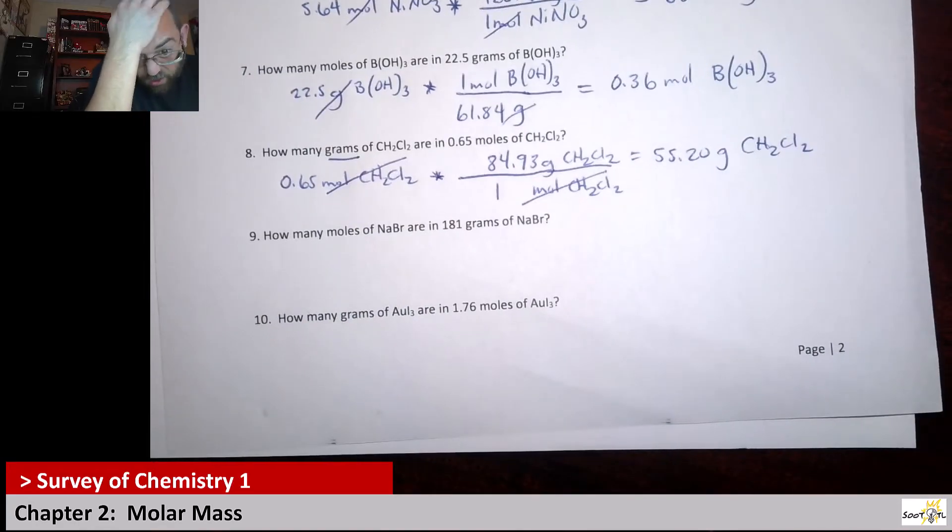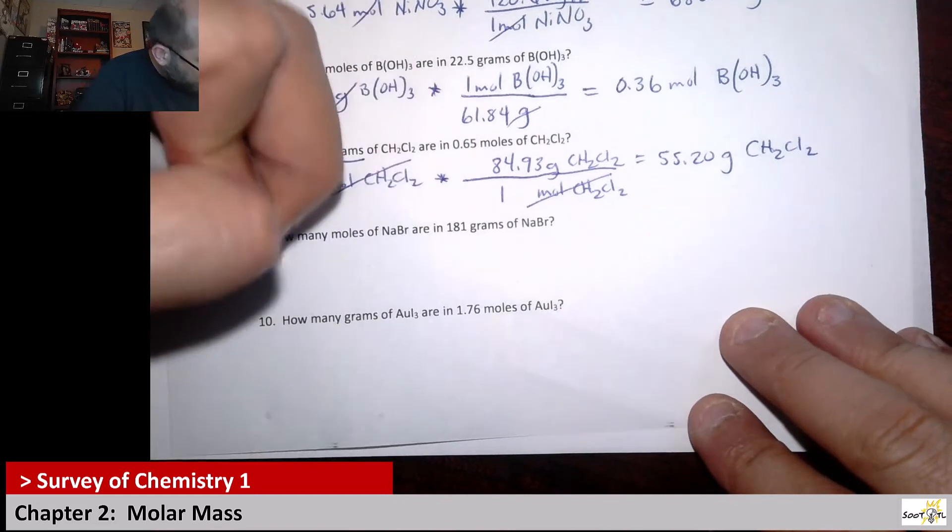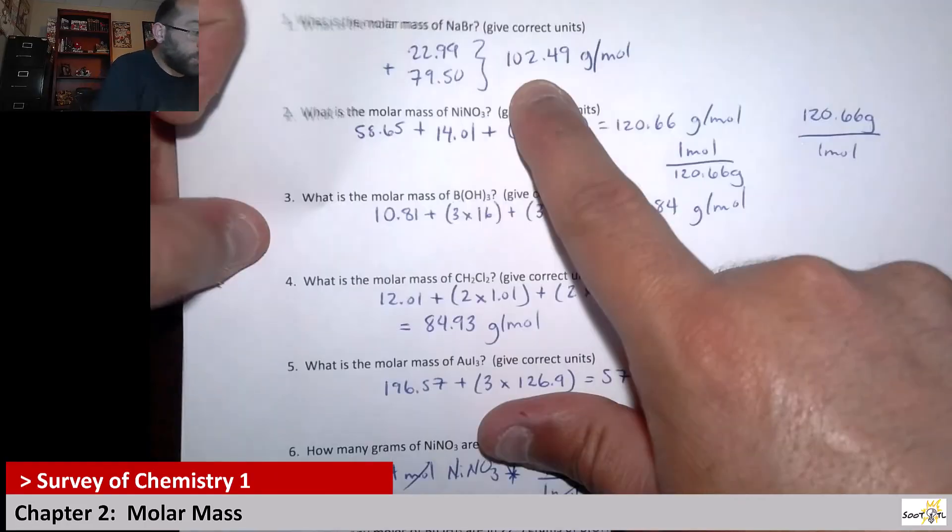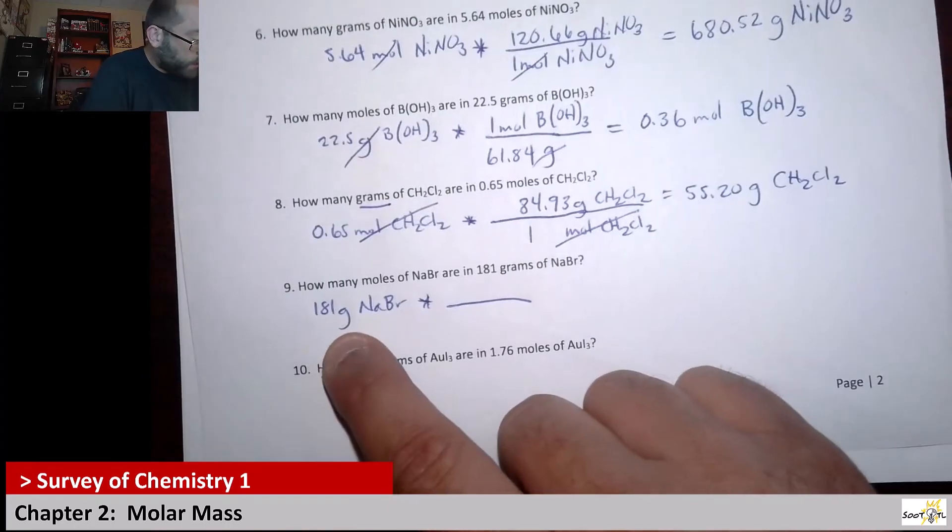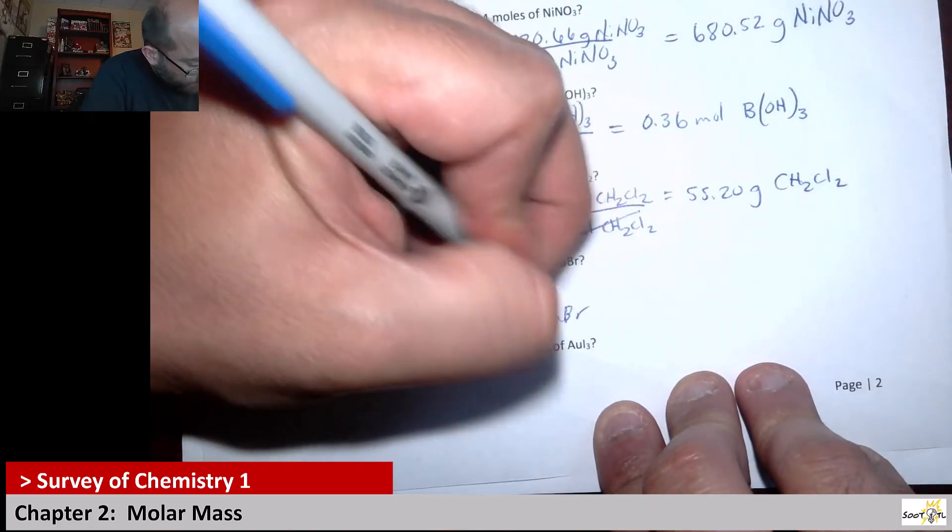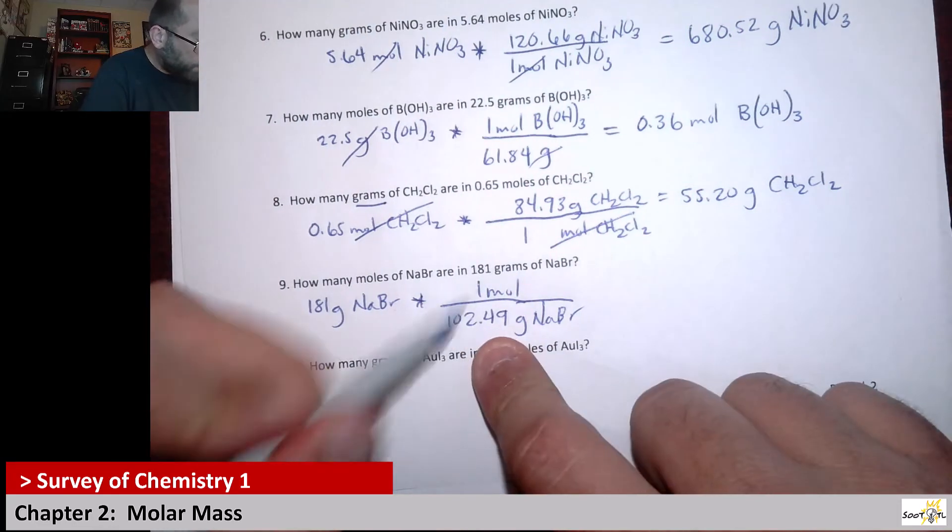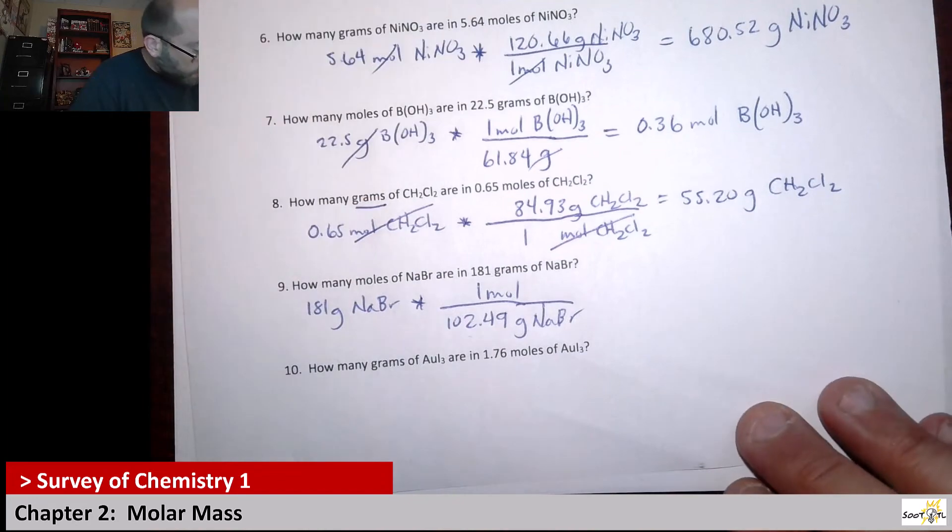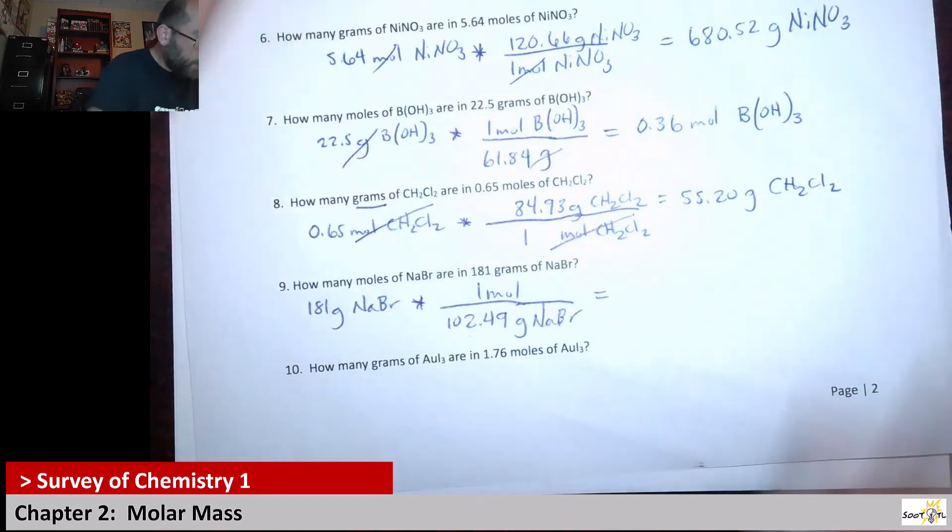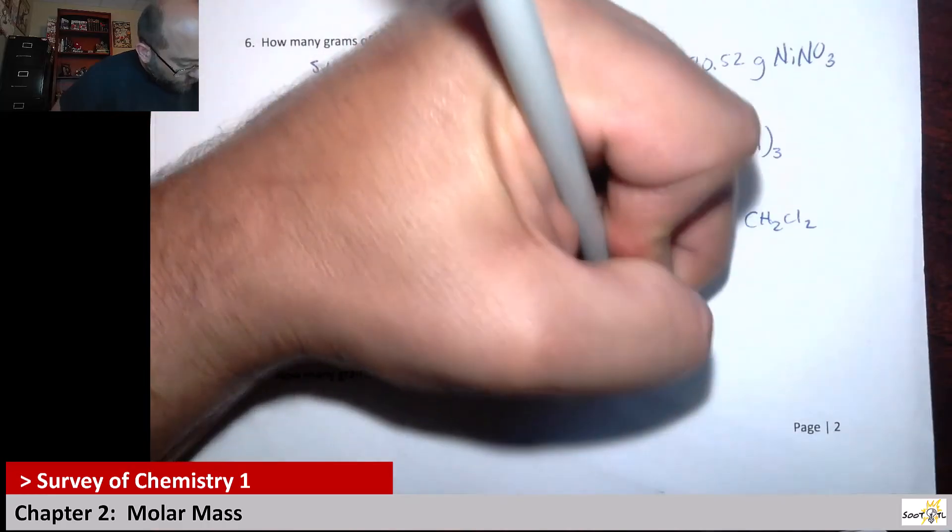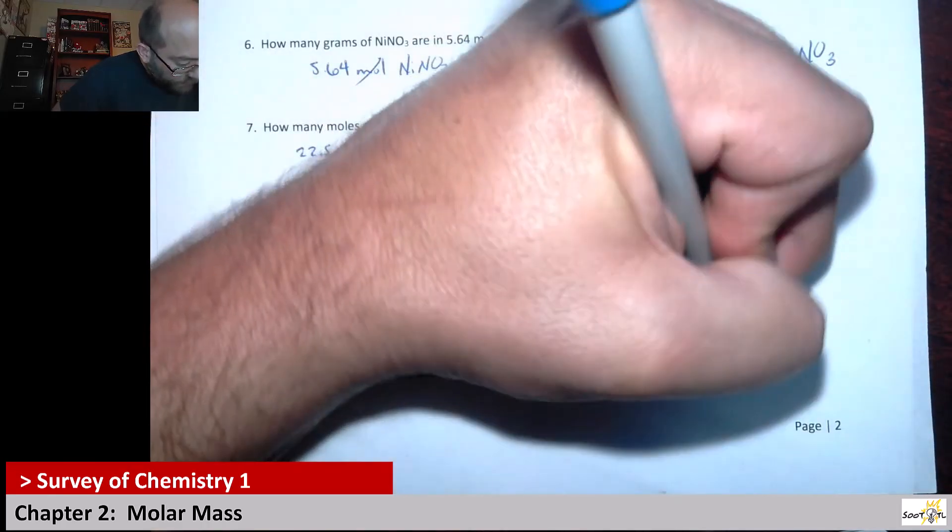Next up, it says how many moles of NaBr are in 181 grams? That's a lot of grams. So we have 181 grams of sodium bromide. Now we can use that molar mass we calculated early on. That's 102.49. So when I look at the gram amount here, I need grams down there. So that means I need the 102.49 grams on the bottom, and I need the one mole on the top. So if you look, one mole is that mass, so we can see right away we've got more than that mass, so we definitely should have more than a mole. So I'm just going to have to take the 181 and divide it by the 102.49, and that gives me 1.77 moles of NaBr.